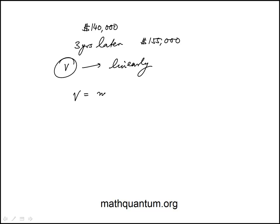So we can use the linear model mt plus b and we can find the slope from the fact that after three years change in time, the price goes from $140,000 to $155,000.